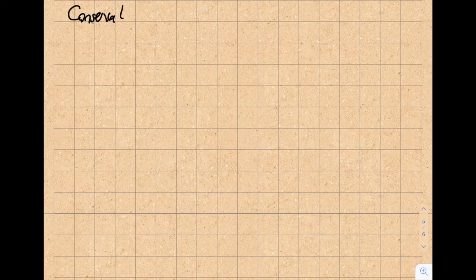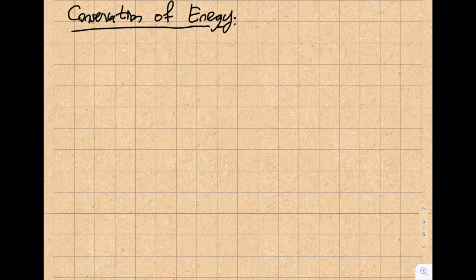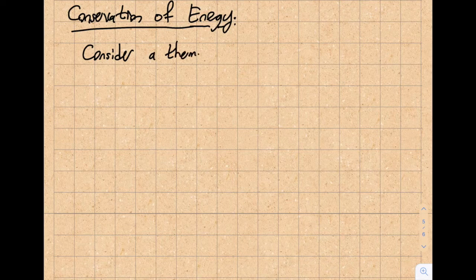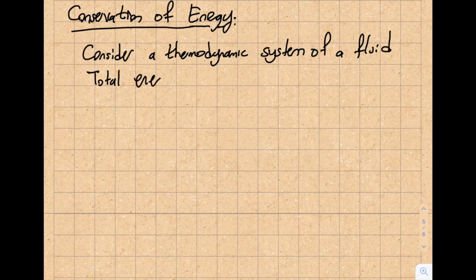We're going to talk about conservation of energy. We started with conservation of mass, then discussed conservation of momentum, and now this is the last component of these conservation principles. It may be one of the more involved ones. It is based on thermodynamics, and we're going to apply the principles to a fluidic system. Let's consider a thermodynamic system of fluid — fluid particles inside of an arbitrary volume. What we want to write is the total energy of the system.